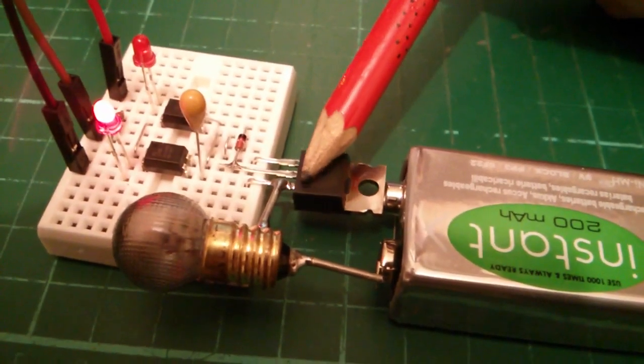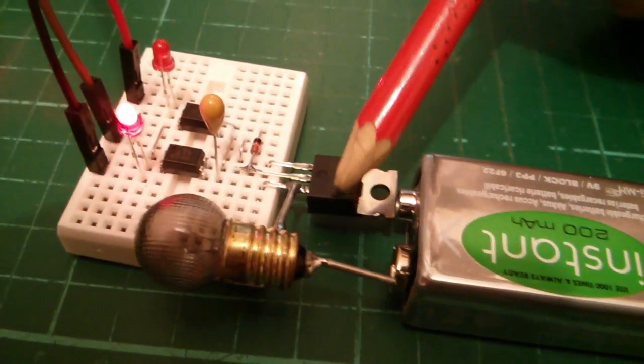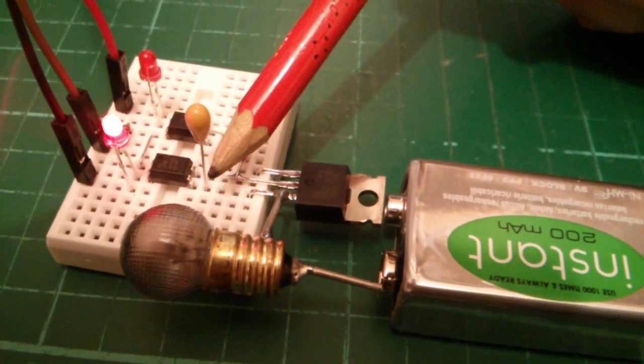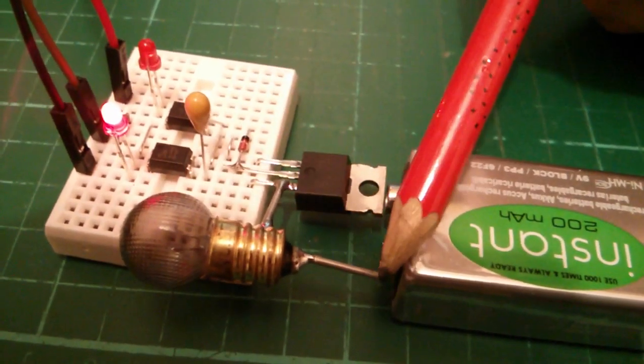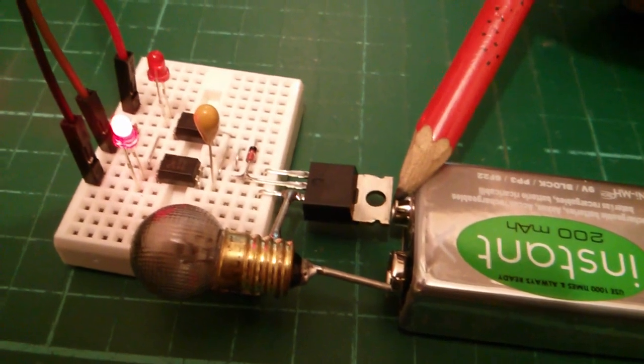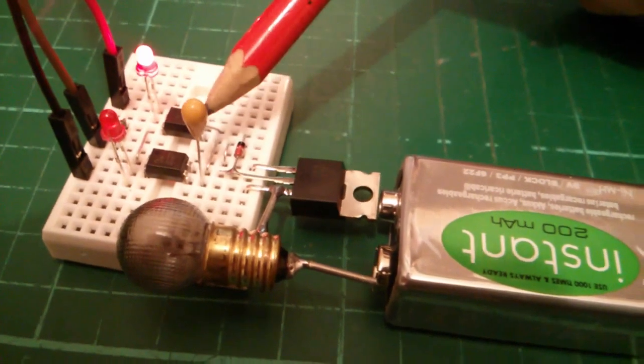When the MOSFET is off, source is pulled down through the bulb to battery negative. So the negative side of the capacitor is at battery negative, the positive side goes through the drain, through this diode, and charges the capacitor up.